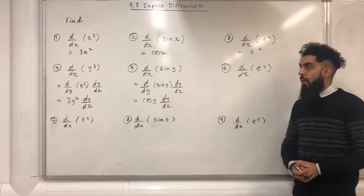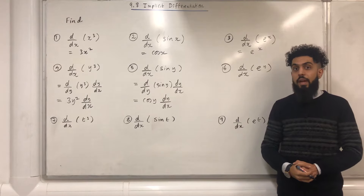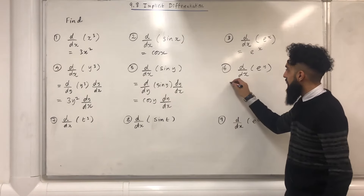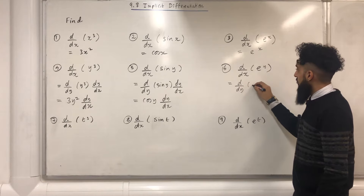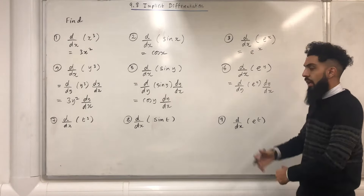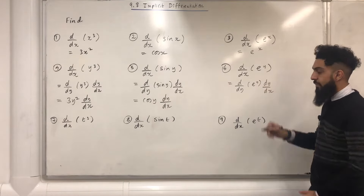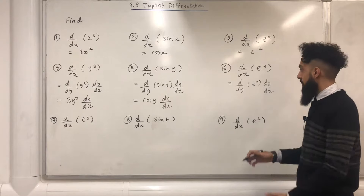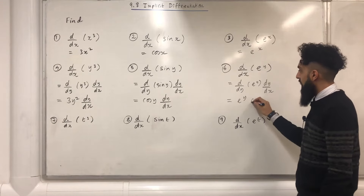Question number six: differentiate e to the power y with respect to x. Using the chain rule, I can write d over dy of e to the power y, multiplied by dy over dx. If I differentiate e to the power y with respect to y, I get e to the power y, and then the dy over dx.